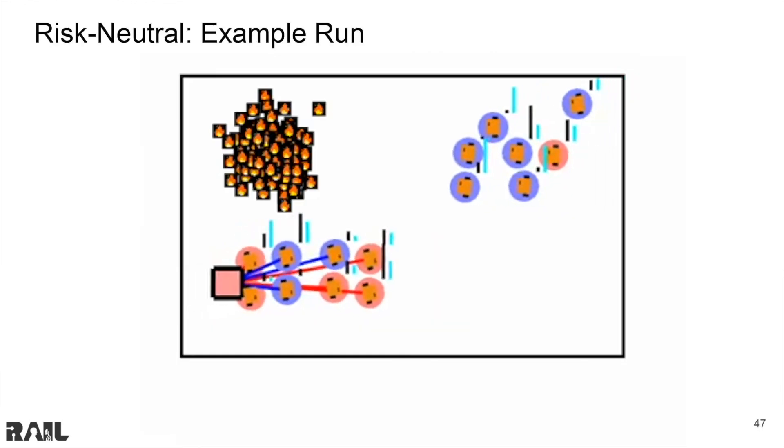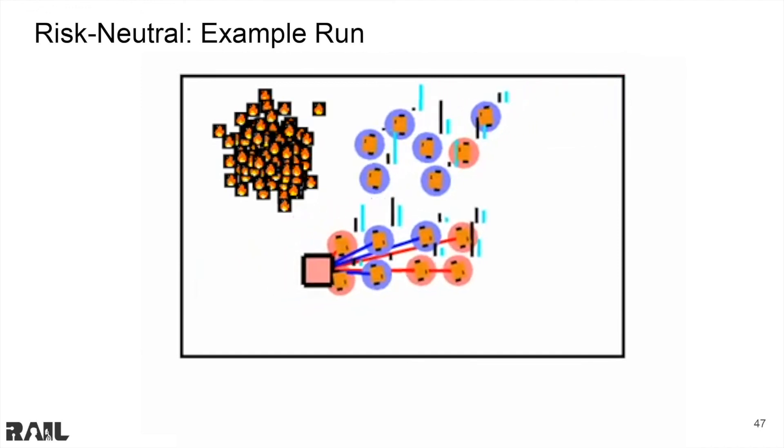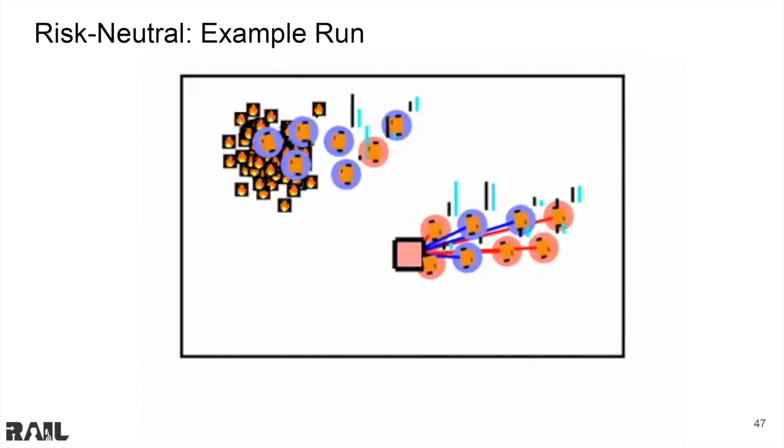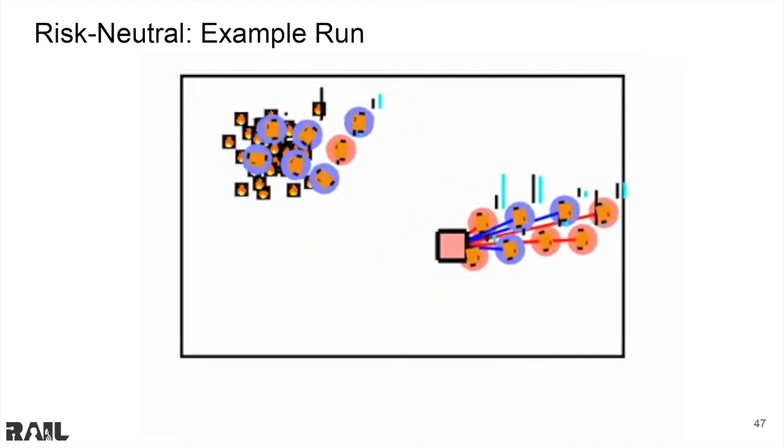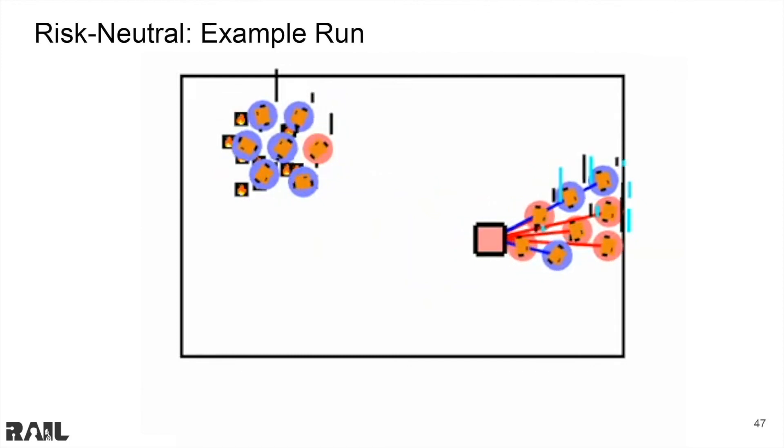Here is an example run using the risk neutral allocation. We can see that the team on the bottom is moving the debris from left to right. This indicates a task success. However, the team on top does not seem to have enough water to douse the flame. This is a task failure.